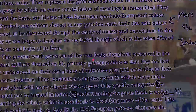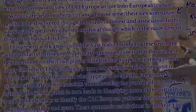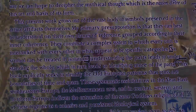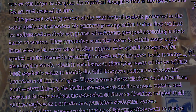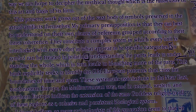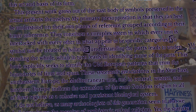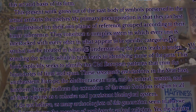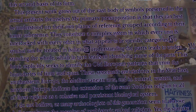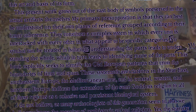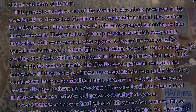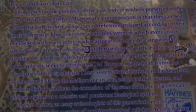This present work grows out of a vast body of symbols preserved in the actual artifacts themselves. My primary presupposition is that they can best be understood on their own planes of reference, grouped according to their inner coherence. They constitute a complex system in which every unit is interlocked with every other in what appear to be specific categories. No symbol can be treated in isolation. Understanding the parts leads to understanding the whole, which in turn leads to identifying more parts.